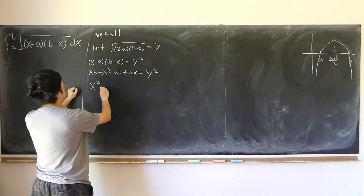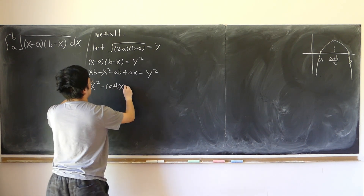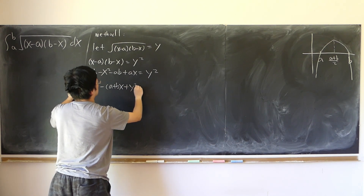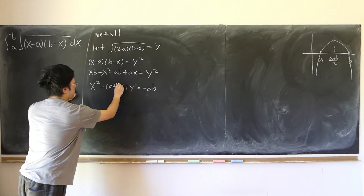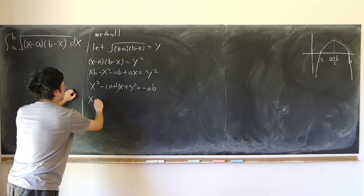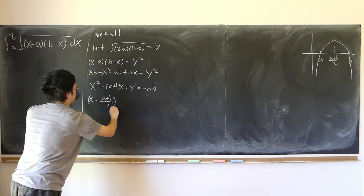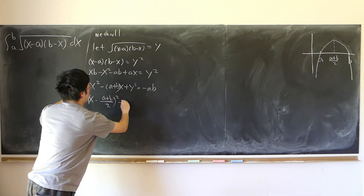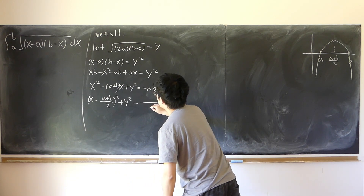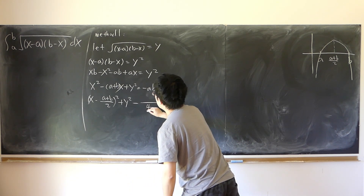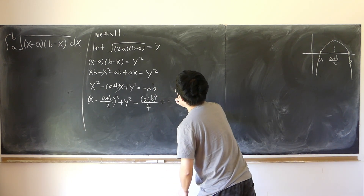So x squared minus (a plus b)x plus y squared equals negative ab. Completing the square: (x minus half of (a plus b))² plus y² minus (a plus b)²/4 equals negative ab.